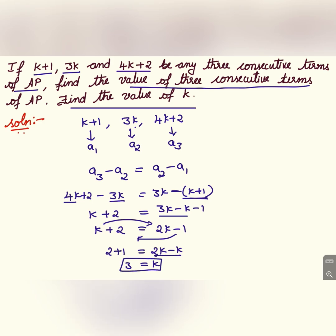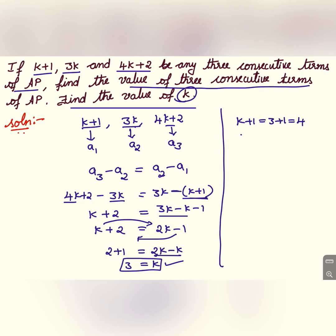Now we need to find all 3 terms. The first term k plus 1 equals 3 plus 1, which is equal to 4. The second term 3k equals 3 into 3, that is 9.